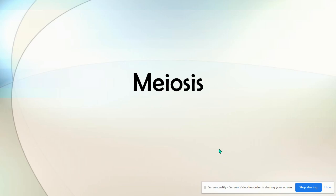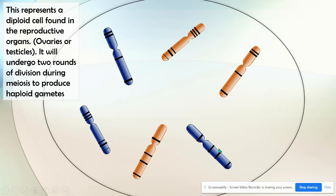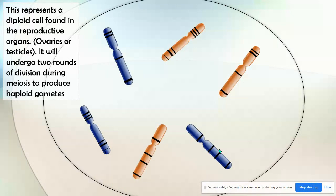Let's talk about meiosis and compare it to mitosis. Mitosis is the cell division process that produces your body cells, or somatic cells, whereas meiosis really only happens in the reproductive organs — the ovaries or testicles — in order to produce sperm and egg. We call sperm and egg gametes, so sex cells are gametes, and meiosis is the process that produces them.